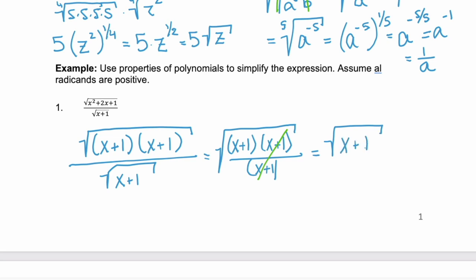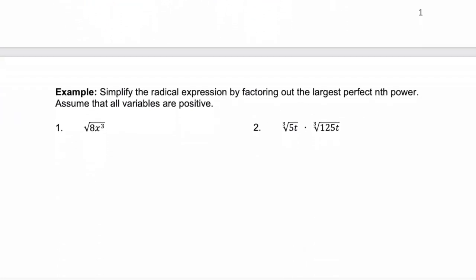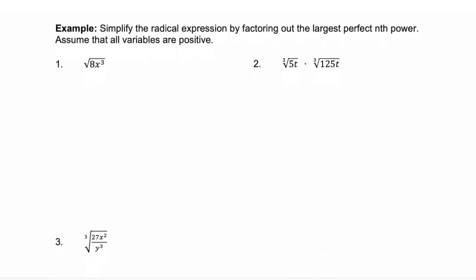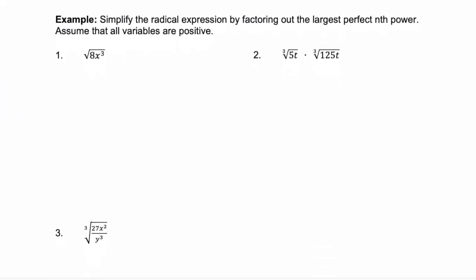This simplifies down to the square root of just (x + 1). Looked a little scary at first, but it actually wasn't too bad. Let's look at page 2. For these examples, we need to simplify the radical expression by factoring out the largest perfect nth power, assuming all variables are positive.